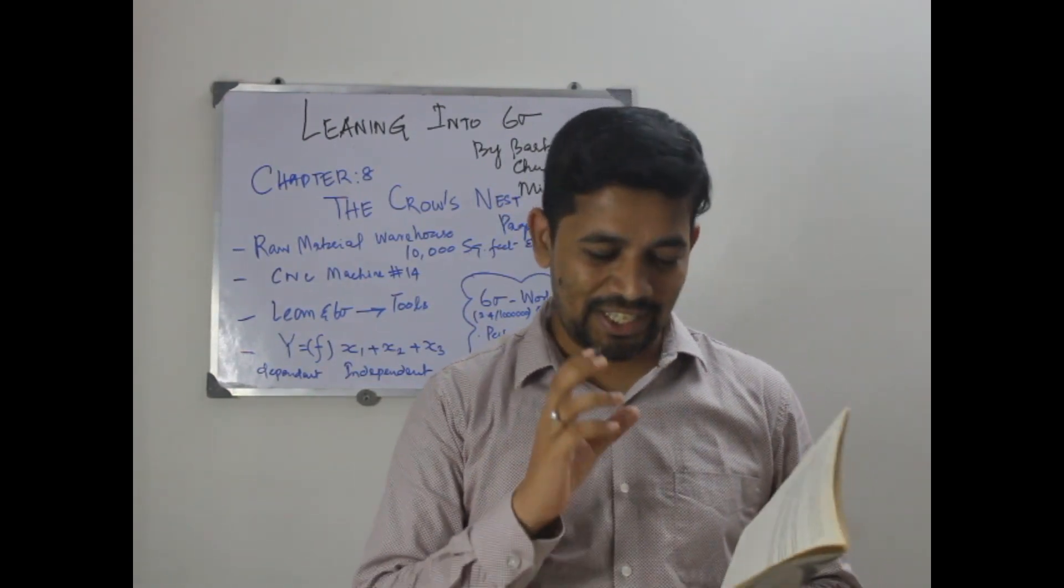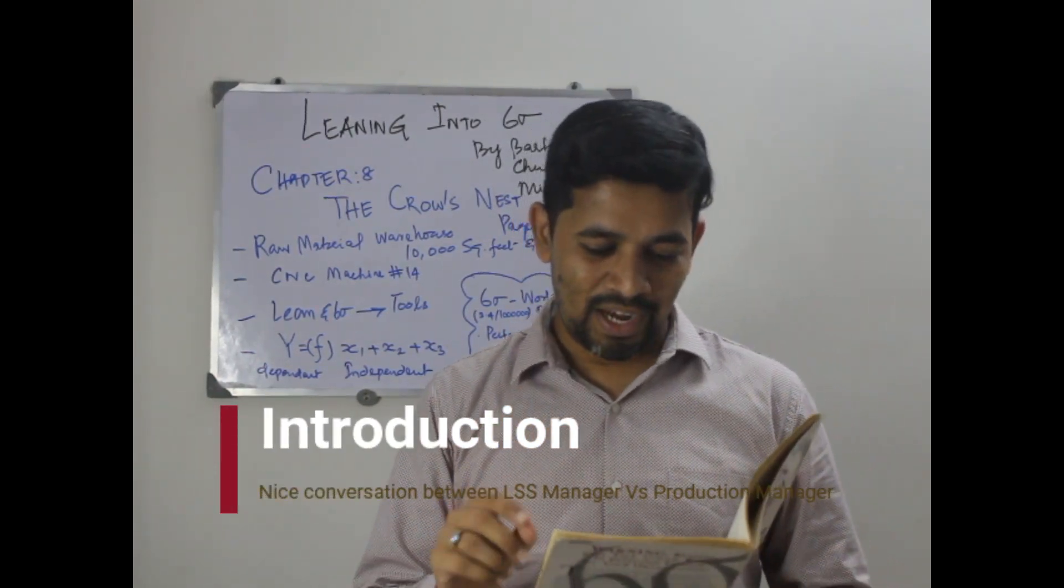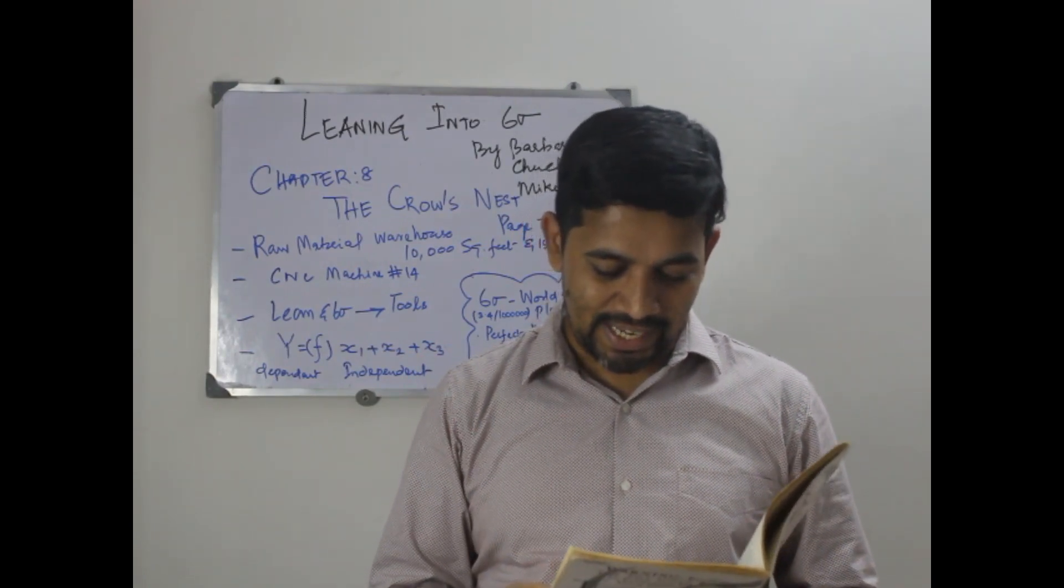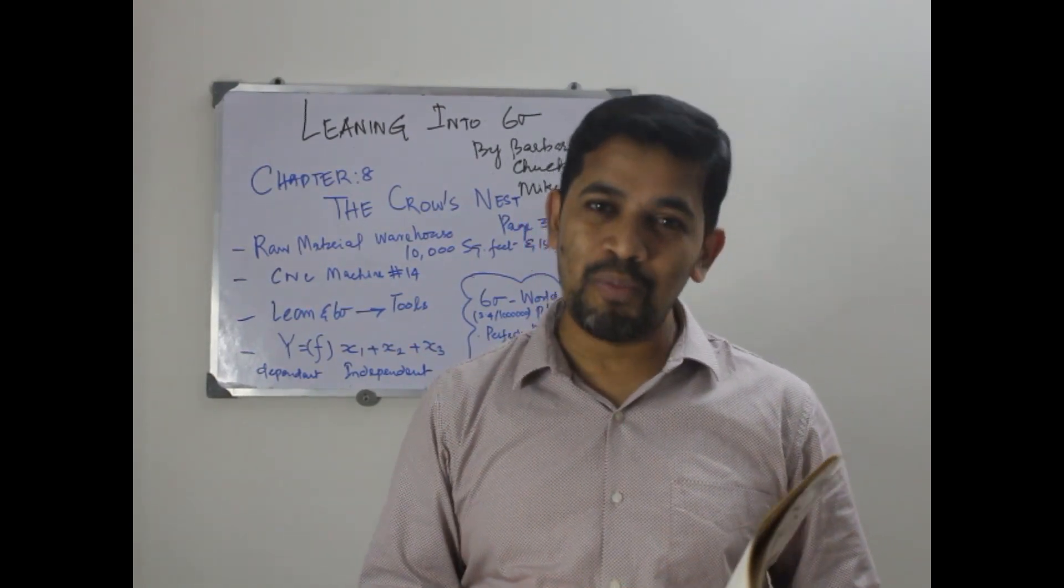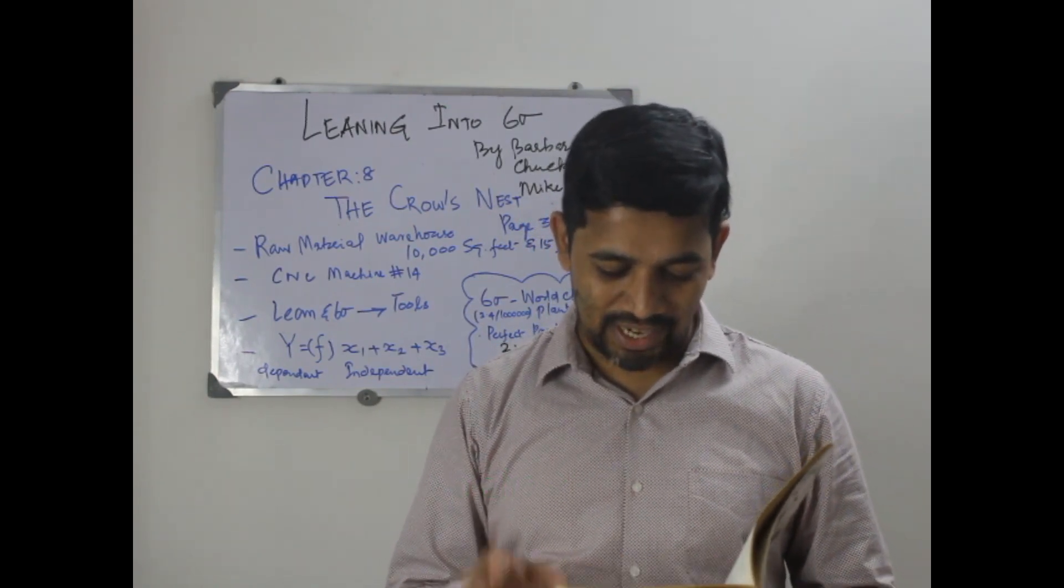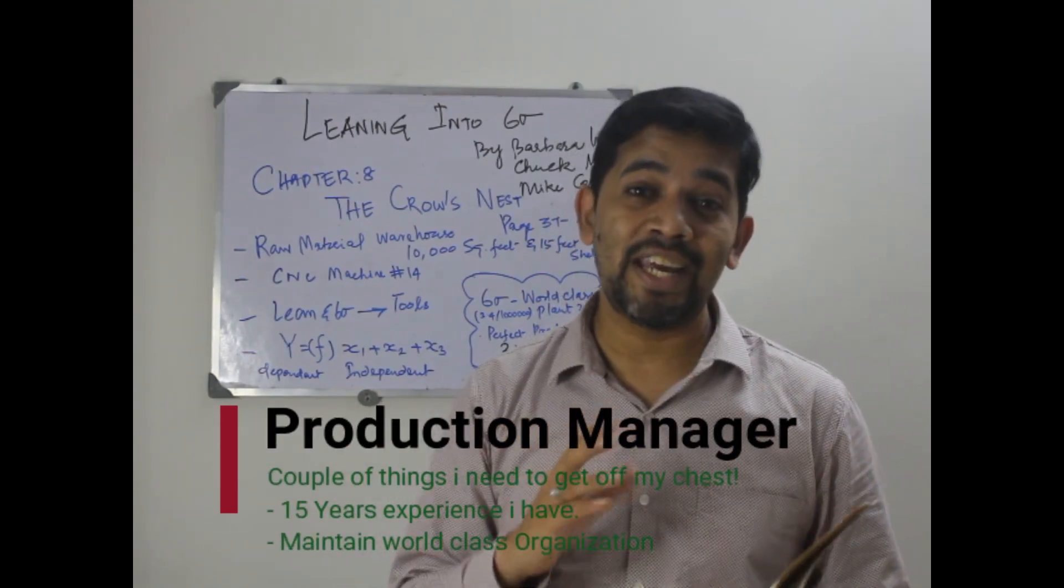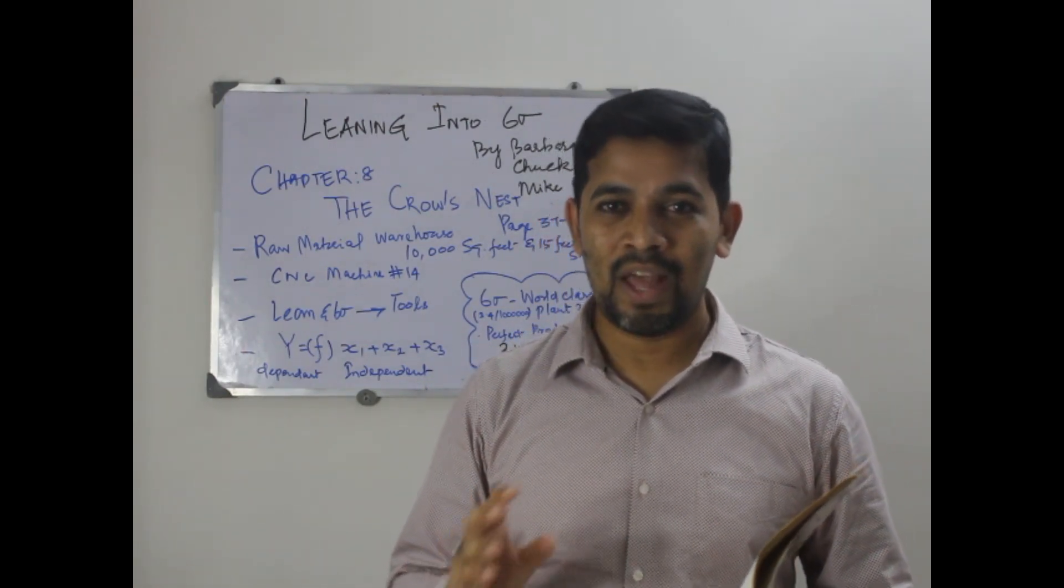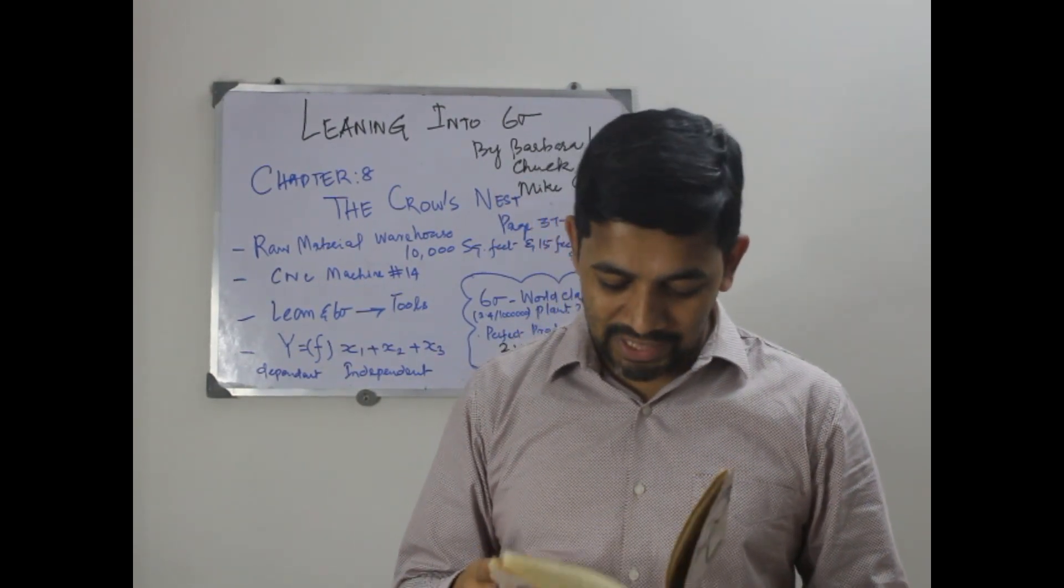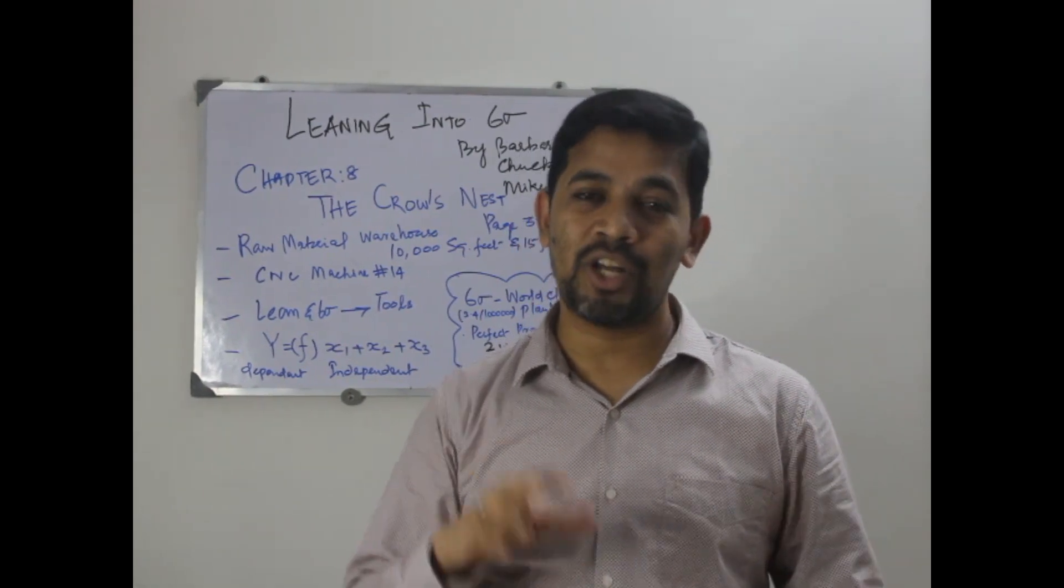The chapter name is The Crow's Nest. It starts with a beautiful conversation between two people. One is a Six Sigma manager named Sam. The other manager is George, who is a production manager. George says he has 15 years of experience and knows the process in and out, and believes that the chances of further improvement are very small or almost not possible.